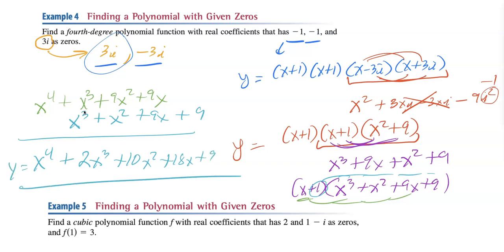There's the function — that was a lot of work. The important part is: i's come in pairs, so if you have 3i you also have negative 3i. Then you write x plus 1, x plus 1, x minus 3i, x plus 3i. If they want you to go further, always multiply the i's together first because you get rid of the i. When multiplying polynomials, you always do it two at a time — you can't multiply all three at once.